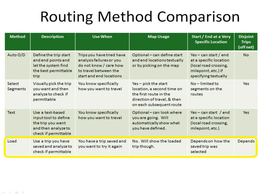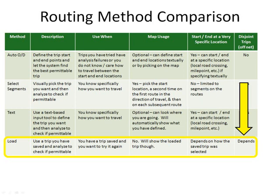Any trip you use can be saved by clicking the save trip icon above the define trip options box. If you have any saved trips, you can reload them via the load saved trip routing method. This method provides a form with a list of all trips you have available, including all trips you have saved along with any trips the state has saved and made available for public use. When you load a trip, it needs to be analyzed. The trip will be defined exactly as it was originally, with exact start and end locations, and whether or not the trip is disjoint controlled by how it was originally selected. When a trip is reloaded, it will be shown on the map and no other map manipulation is needed.